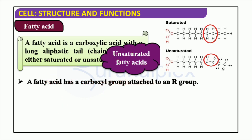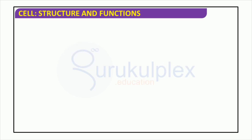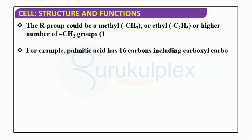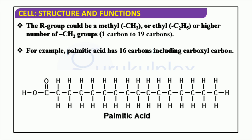Biomolecules are the building blocks of all living organisms. They are composed of several elements, among them the R group, which is an important component. The R group could be a methyl (CH3) or ethyl (C2H5), or a higher number of CH2 groups, spanning 1 carbon to 19 carbons. For example, palmitic acid has 16 carbons including the carboxyl carbon. This example highlights the importance of R groups in the biomolecule structure.